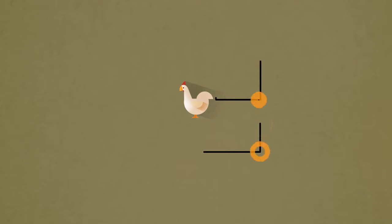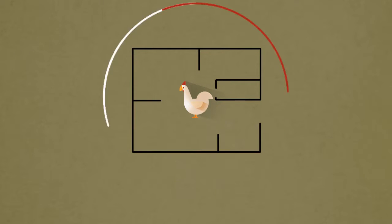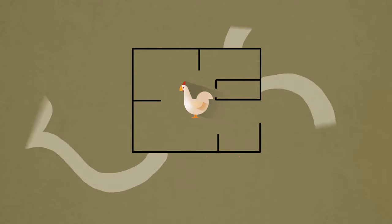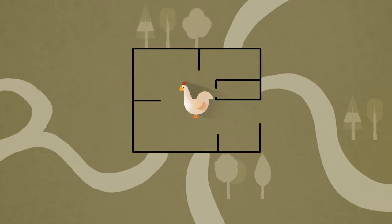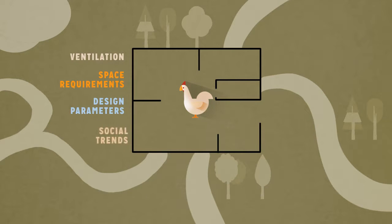An important consideration for me during this project was to understand how designing a chicken coop was similar to designing a house. I had to use the design thinking process to design for comfort and protection from the elements. I had to consider ventilation, space requirements, and a range of other design parameters and social trends.